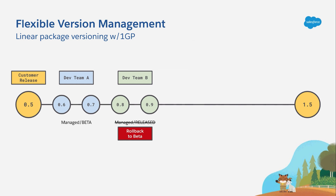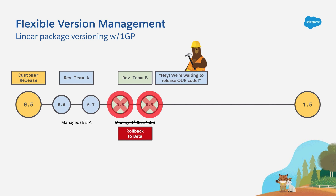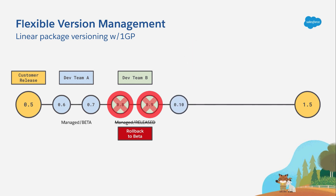Now there's a new problem. Dev Team A is ready to go with their next beta release, but they're blocked until Dev Team B opens a case with partner support, gets their packages rolled back, and removes all the unwanted feature metadata. Only then can Dev Team A actually get back on track and drive towards the next customer release, which will be version 1.0. Hopefully everyone learned from this experience, and from this point forward both teams are more careful to work sequentially. But unfortunately, sequential — while safer — is a lot less agile, so the overall velocity of both dev teams goes down.